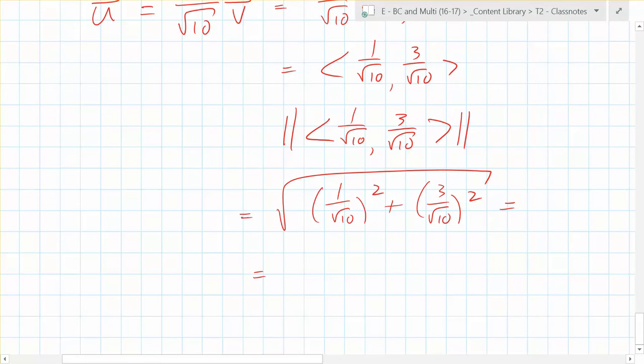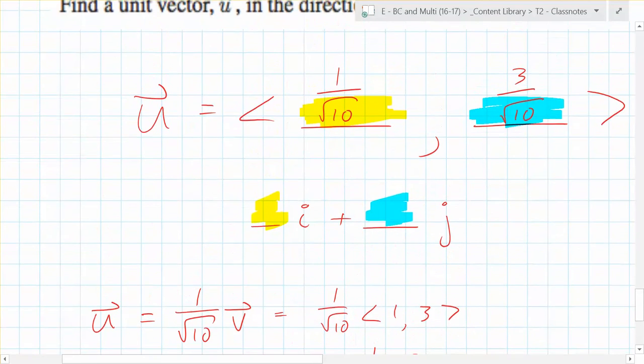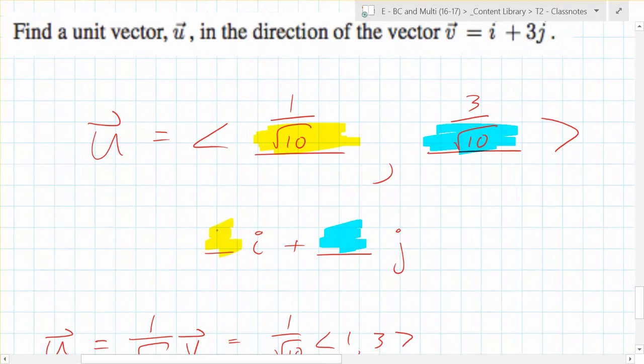It's one-tenth plus nine-tenths. That's the square root of one, which is one. You just verified it. You can write it either way: one over root 10 i plus three over root 10 j. You might try to rationalize the denominator like root 10 over 10, but you don't need to rationalize anymore—well, in math you might want to rationalize. In life, but you know...